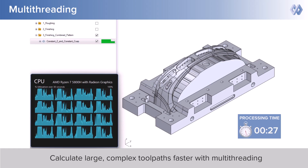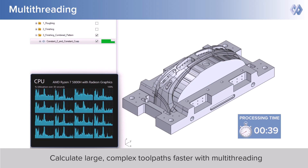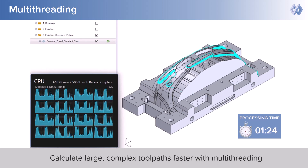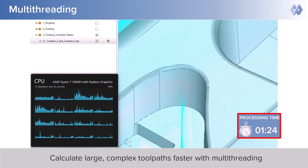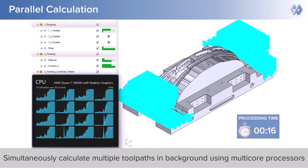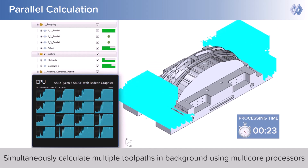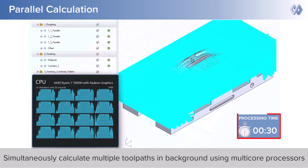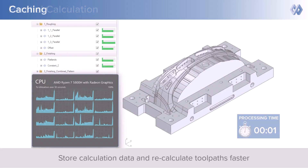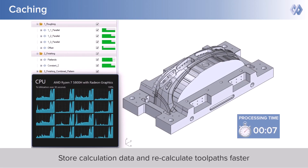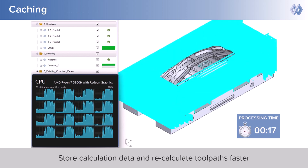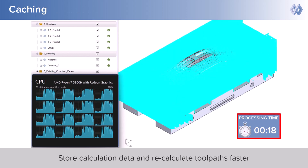ModuleWorks kernel uses the latest multi-threading technology to quickly calculate large, complex toolpaths and generate smooth, high-speed finishing cycles. In this example, you can see that multiple toolpaths can be calculated simultaneously using the background calculation technology, which saves time. All the toolpaths store calculation data which is subsequently used in the next iterations, reducing recalculation time.